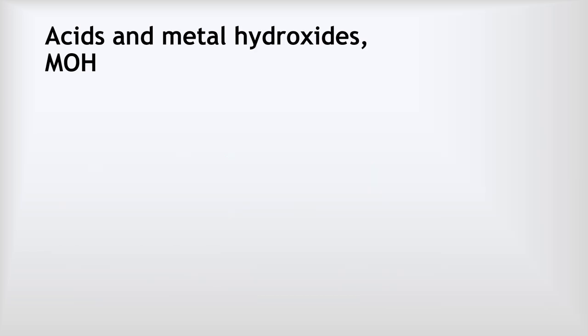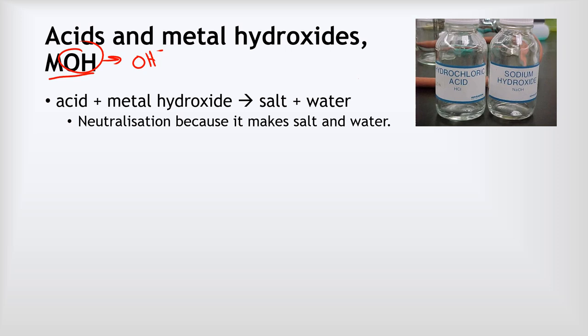Let's look at the reaction of acids and metal hydroxides. A metal hydroxide is any compound made of a metal and the hydroxide ion (OH⁻). When hydroxides react with acids, we produce a salt and water, which means this is a neutralization reaction. You won't see anything obvious with this reaction because the hydroxides, acids, salt, and water are all colourless. But you might observe that the reaction will warm up as energy is released, so the temperature will increase.